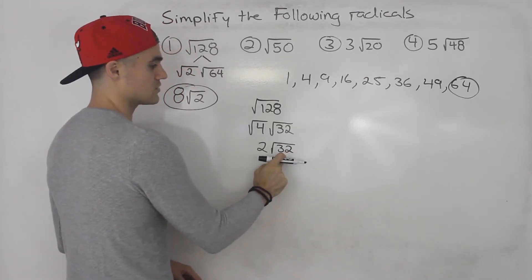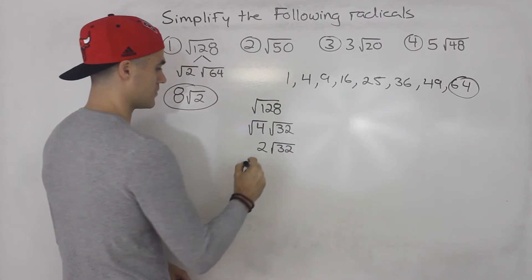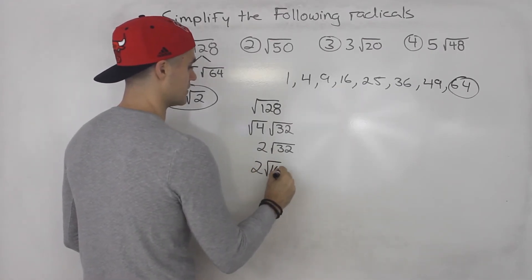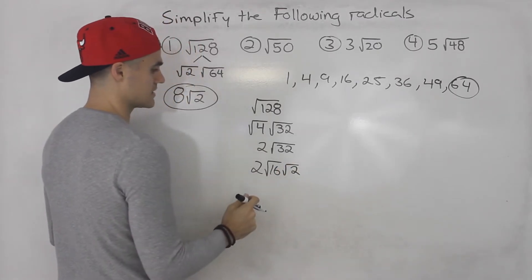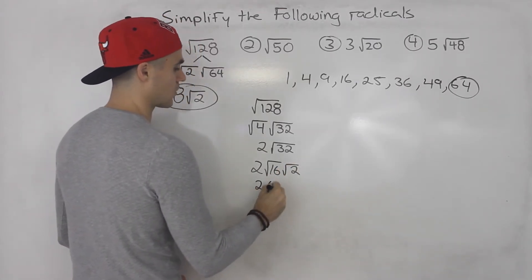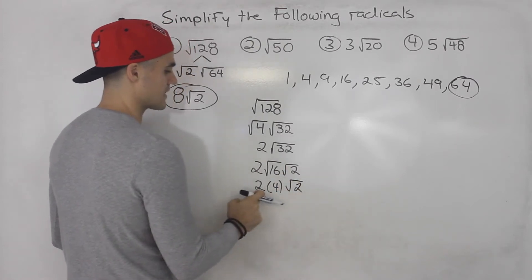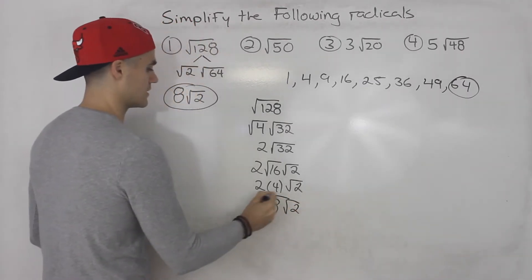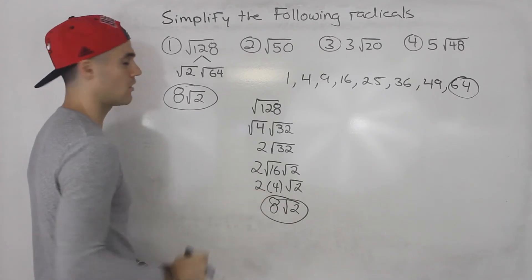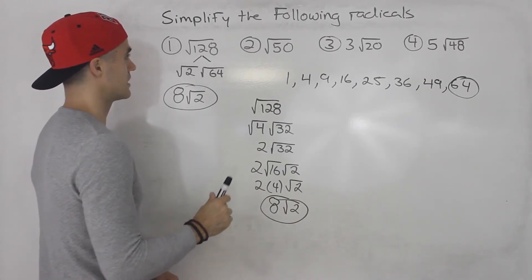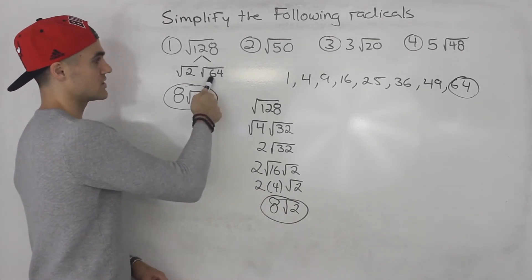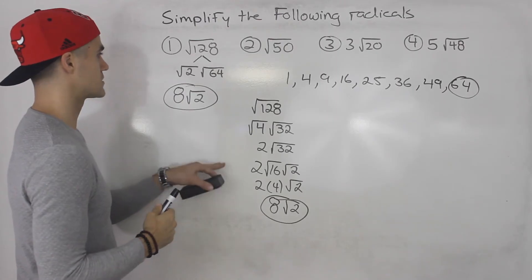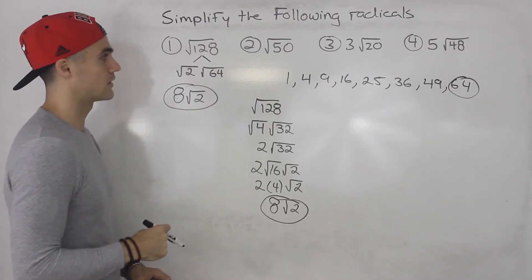So we'd have root 32 here. But then the square root of 32 we can simplify further, because the square root of 32, that divides by 16. And what's the square root of 16? Square root of 16 is 4. And then root 2 we would just leave as is. And then 2 times 4 gives us 8. So we still end up getting the same answer as long as we simplify all the way to the end. But if you can find the largest rootable number that the number is going to divide by, then you don't have to do all these steps. You just get the answer in one step.